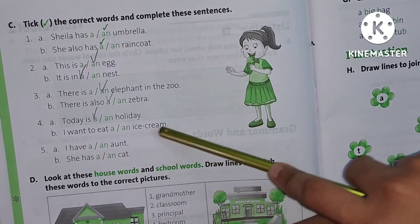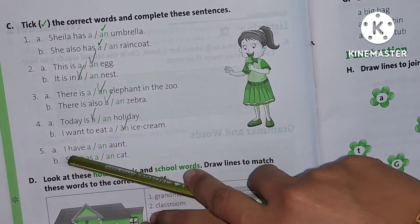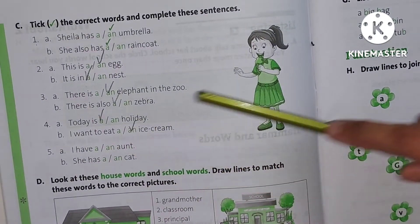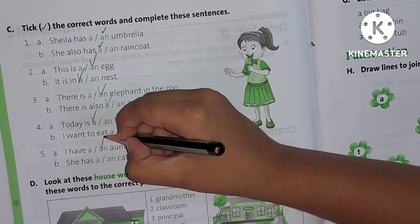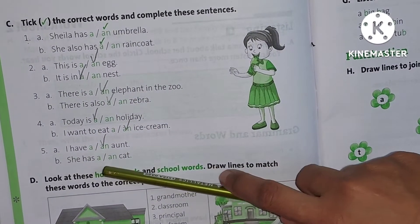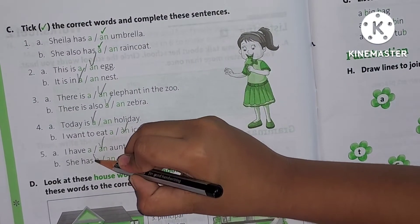A dash ice cream. A or AN? An ice cream. Good. I have dash aunt. An aunt. She has dash cat. A or AN? A. Good.